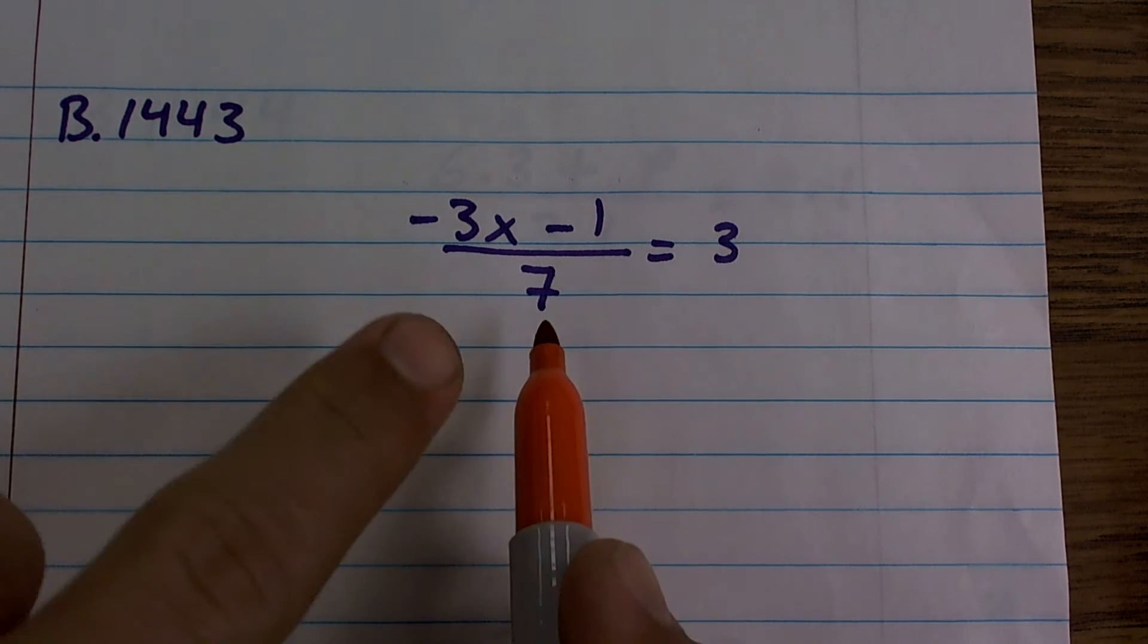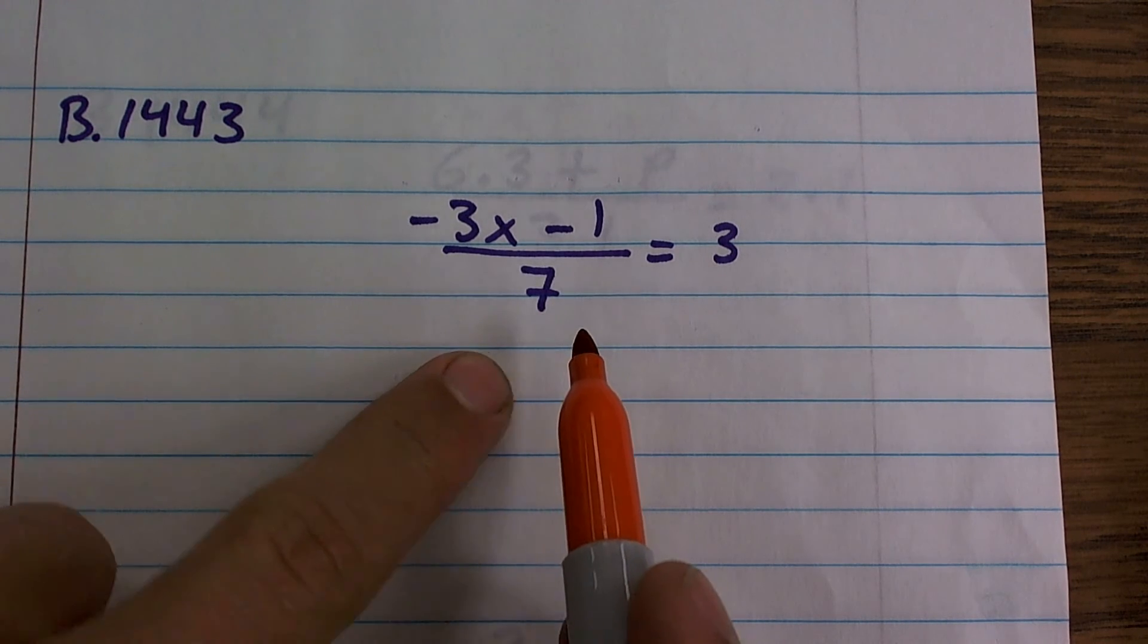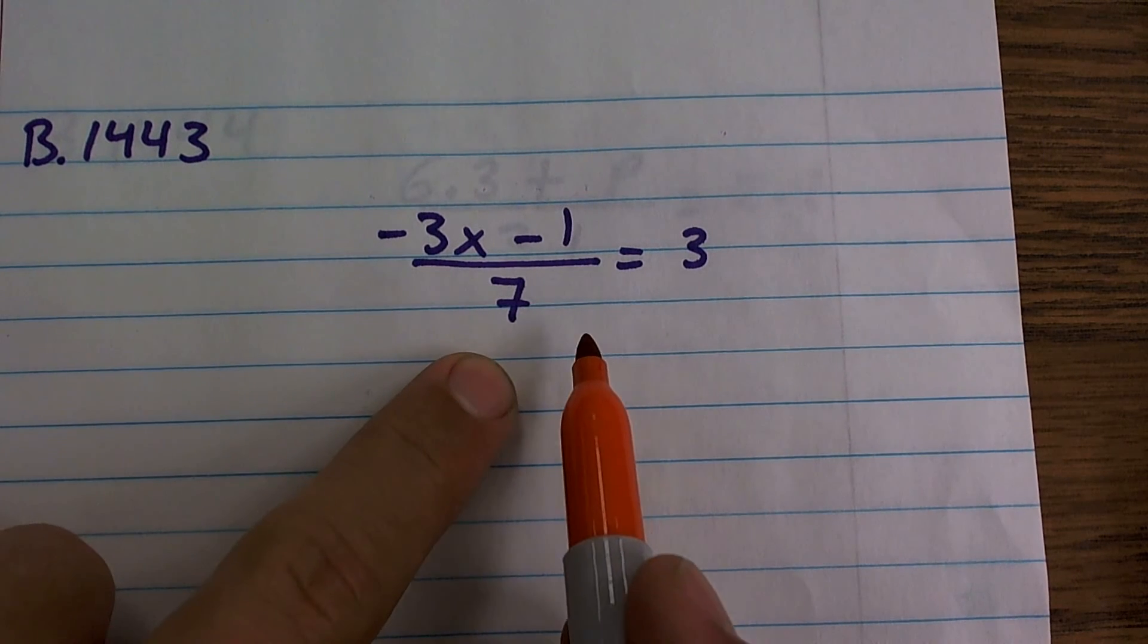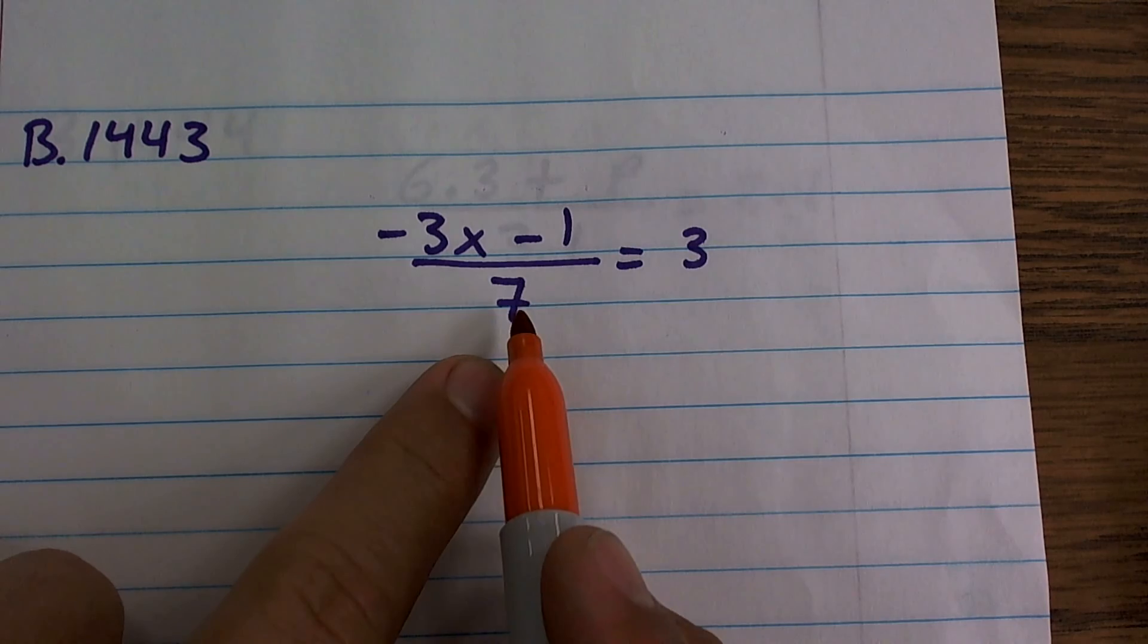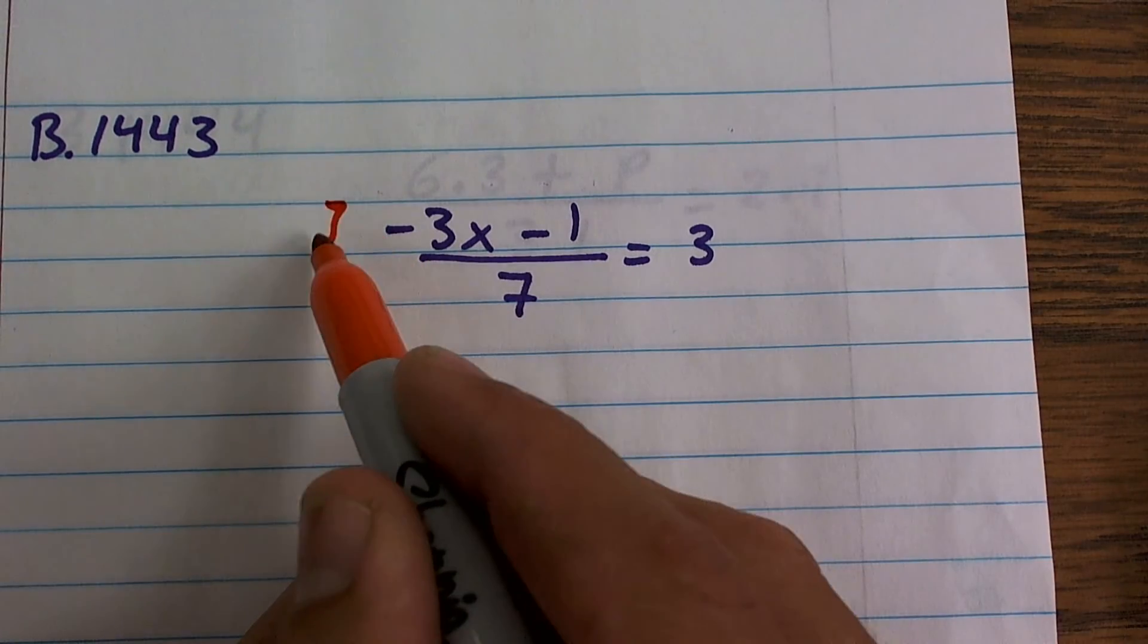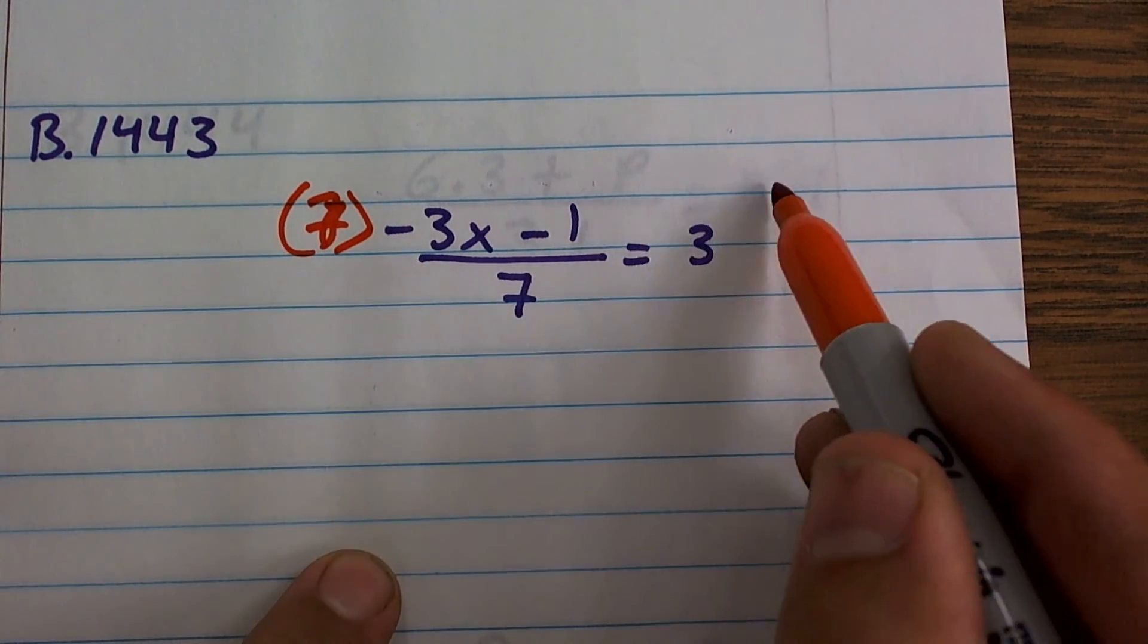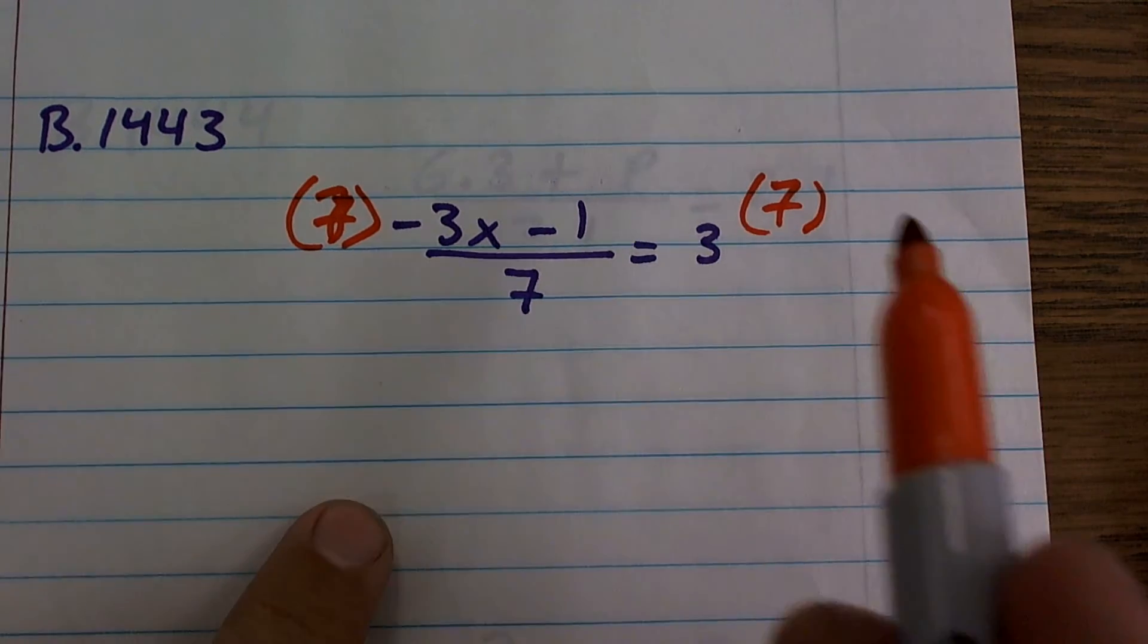So let's get rid of our fractions. So here, I have a 7 on the denominator. To get rid of a fraction, you just undo what's in the denominator, or you undo what's happening. Since I'm dividing by 7, I can multiply by 7 on both sides by using the multiplication property of equality.